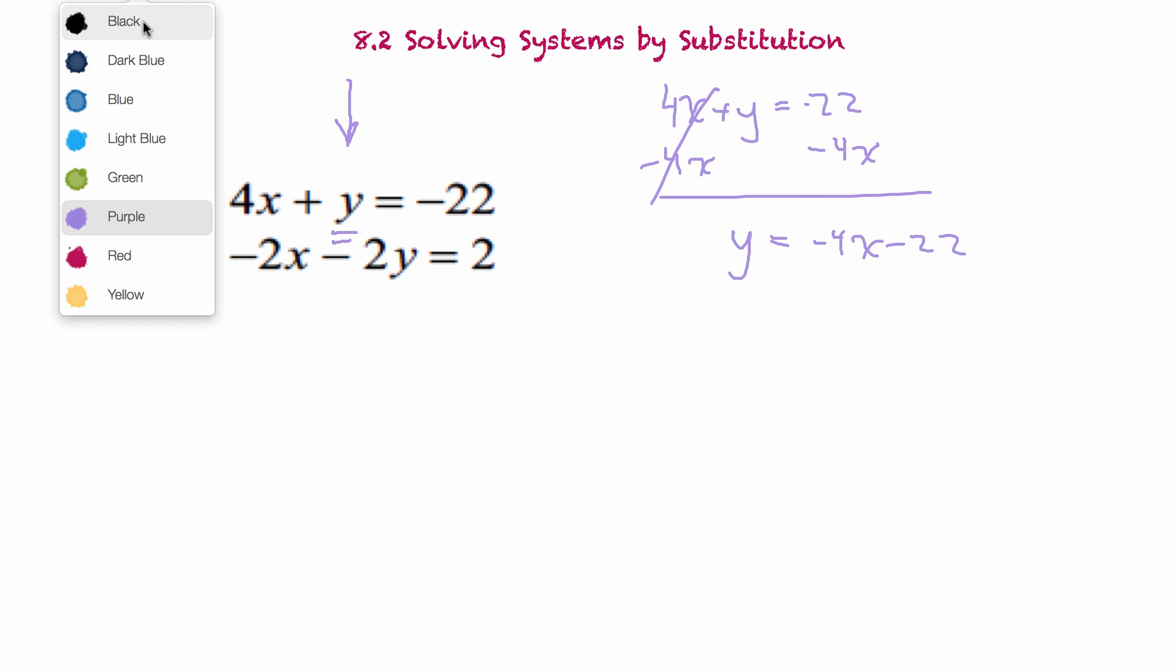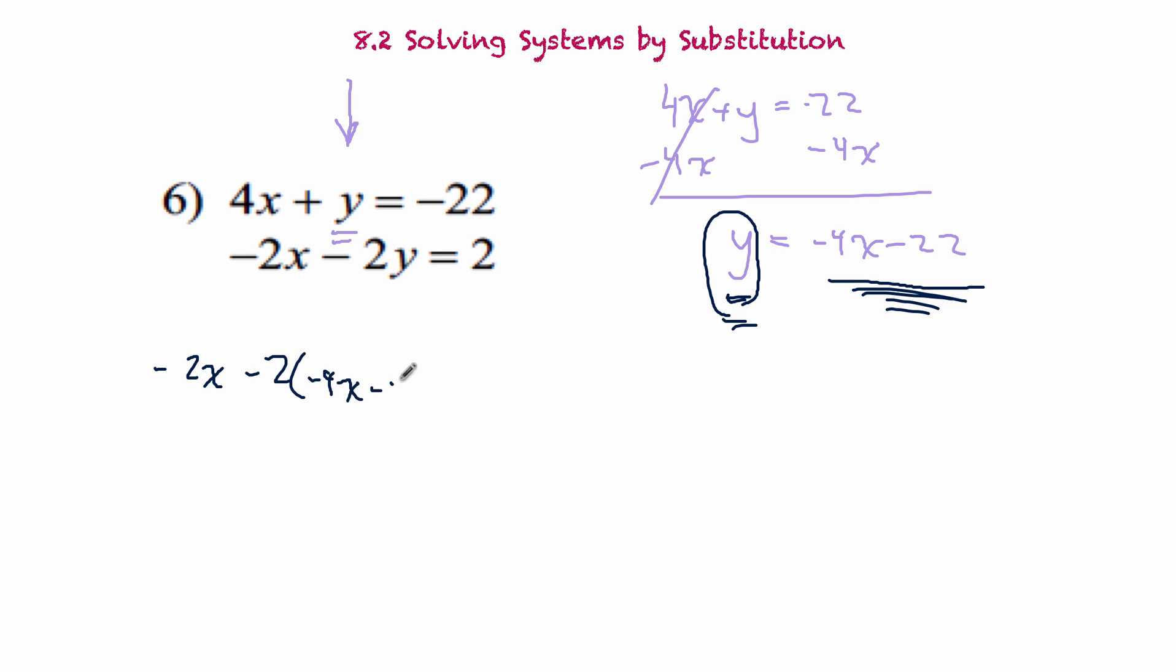What do we do here? We just write the two terms separately. So we're going to write it as negative 4x minus 22. You cannot combine those two terms. So now that we know that y equals negative 4x minus 22, in the other equation, we're going to plug that in for y because we know what y is. We're going to put negative 4x minus 22.